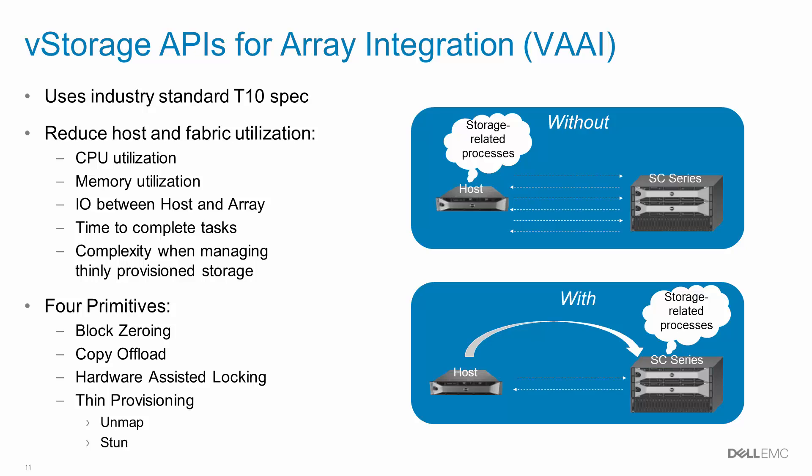The vStorage APIs remove the storage-related burden from vSphere hosts and the Fibre Channel or Ethernet fabric, allowing SC-Series arrays to handle that workload, which they are purposely designed and built for. SC-Series arrays support all four block primitives.